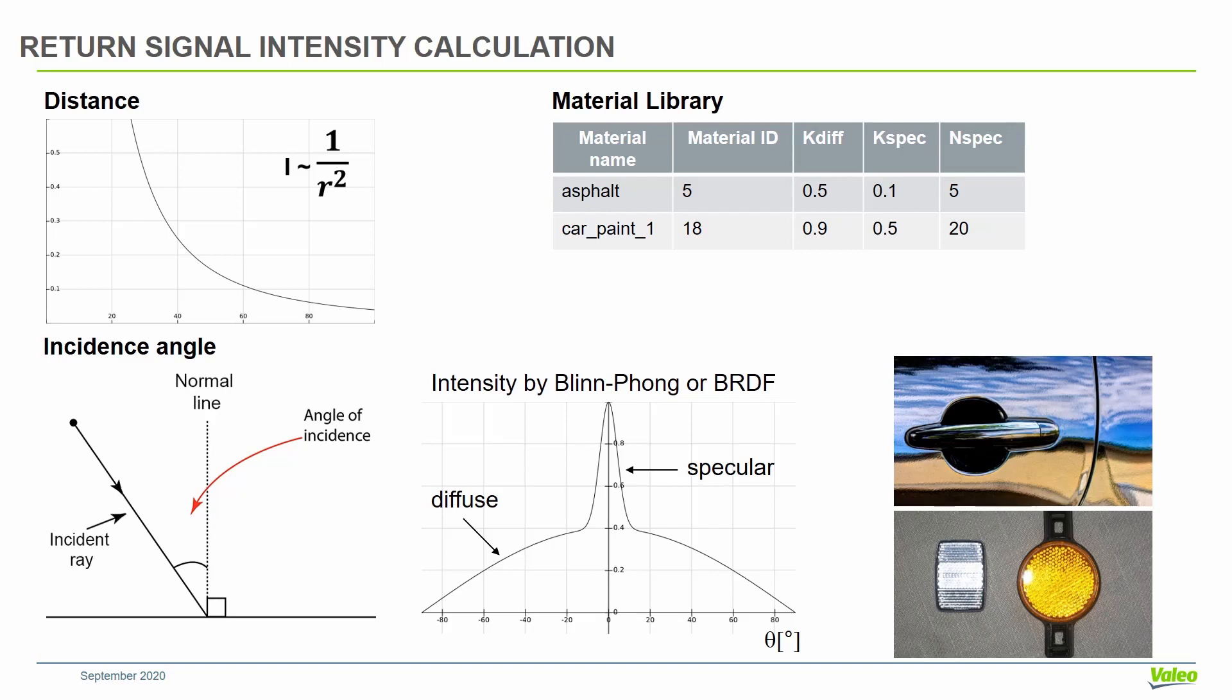With this, we can model different materials like car paint, which will have some diffusive and some specular components, and materials like retroreflective materials.